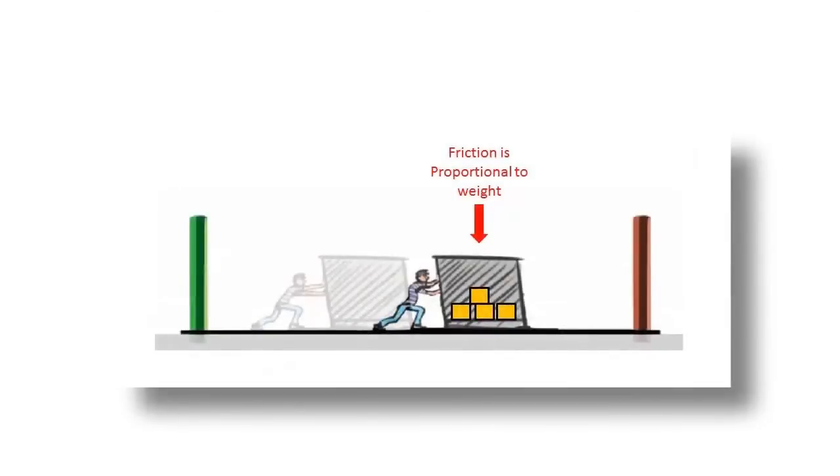It is important to note that friction is proportional to weight. If the weight in the contents of the box were to be doubled, the friction force would be doubled, requiring more applied force to move it.